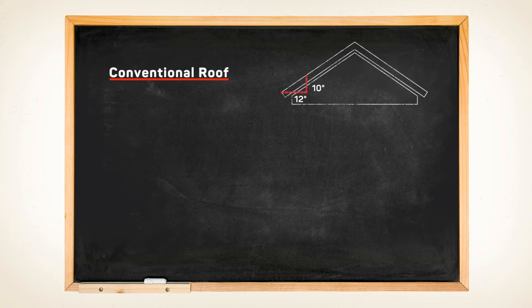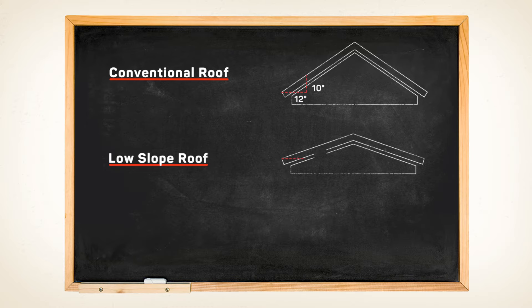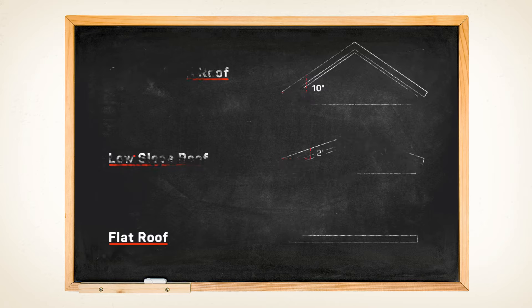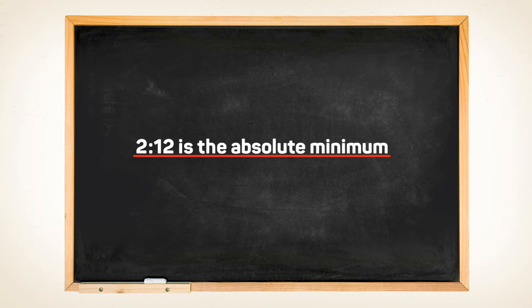Traditionally, residential roofs had four or more inches of rise for every 12 inches of run, with low slope roofs having a rise of between two to four inches and anything under two inches being classified as a flat roof. This means that 2/12 is the absolute minimum slope for asphalt shingle installation.